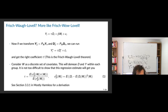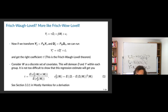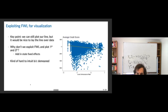OLS puts a lot of weight on the groups where you get a lot of variation to identify your effect, versus if you did the propensity score approach — propensity score weighting to average things up — you might get a different weighted combination of treatment effects. If you want to see this derivation, it's in section 3.3.1 of Mostly Harmless Econometrics.